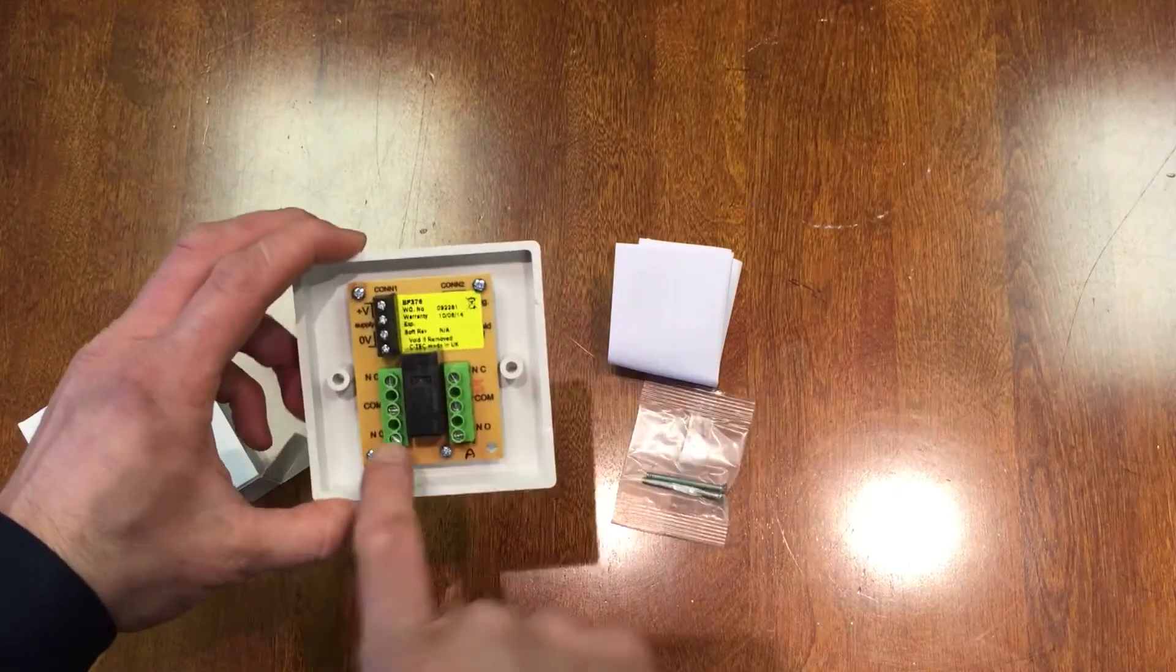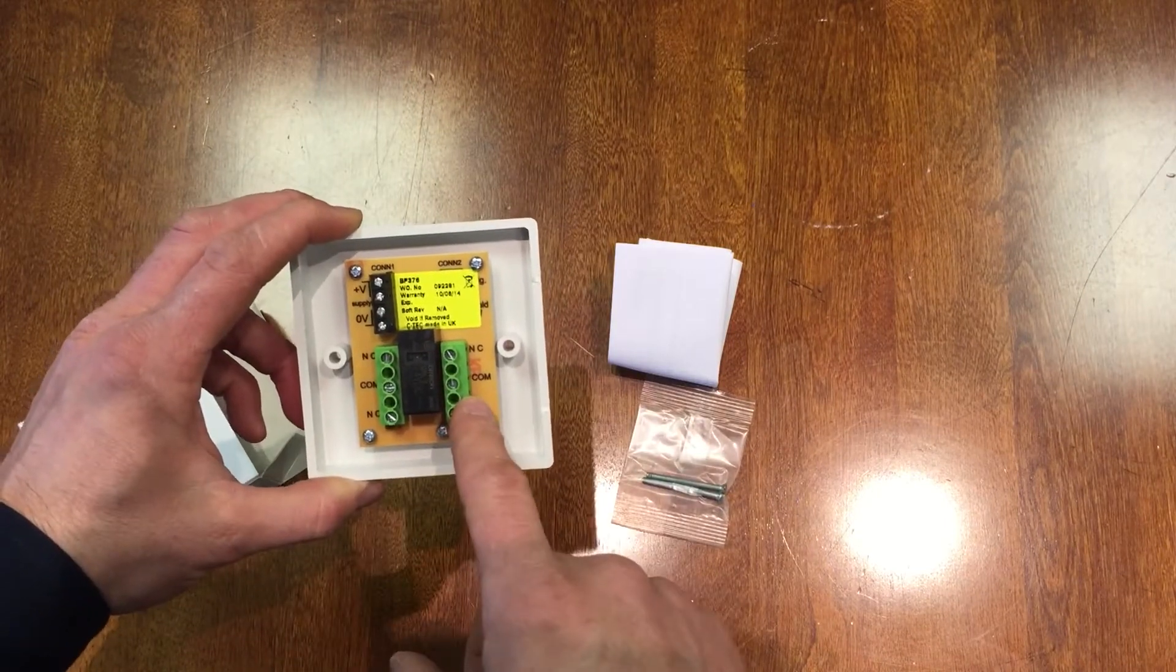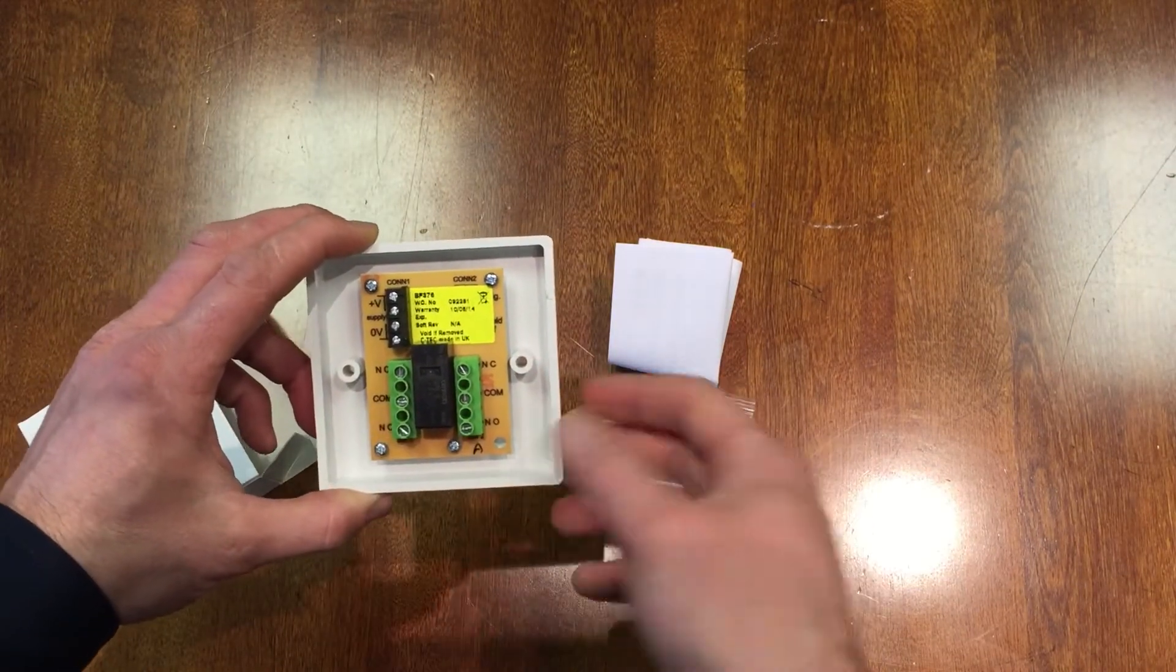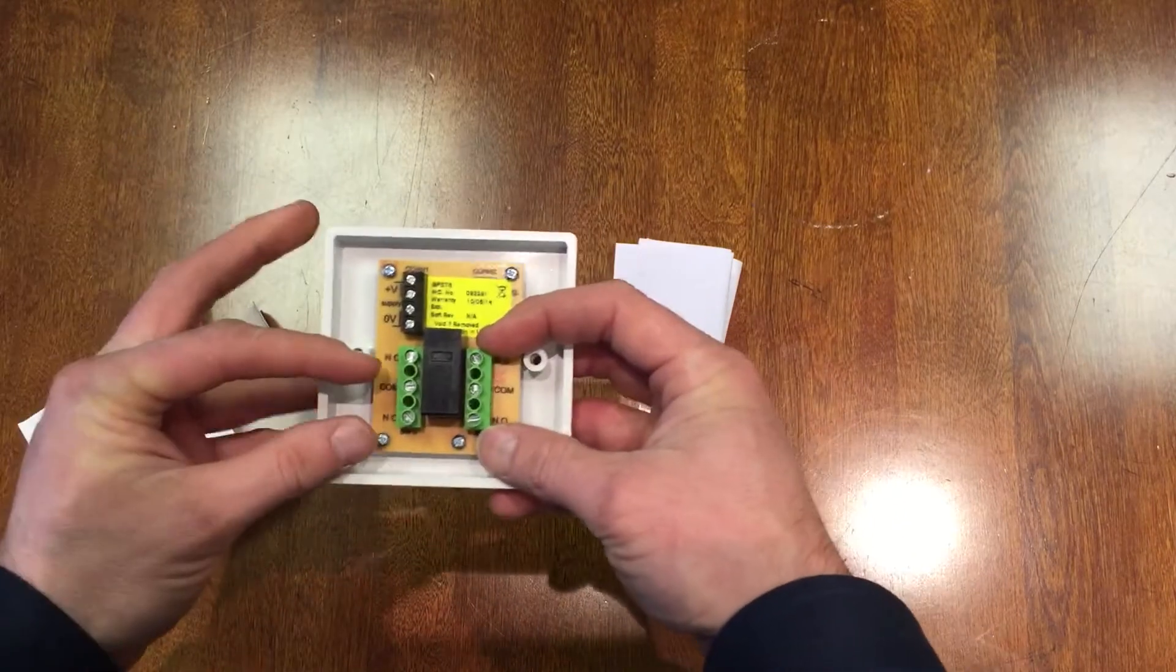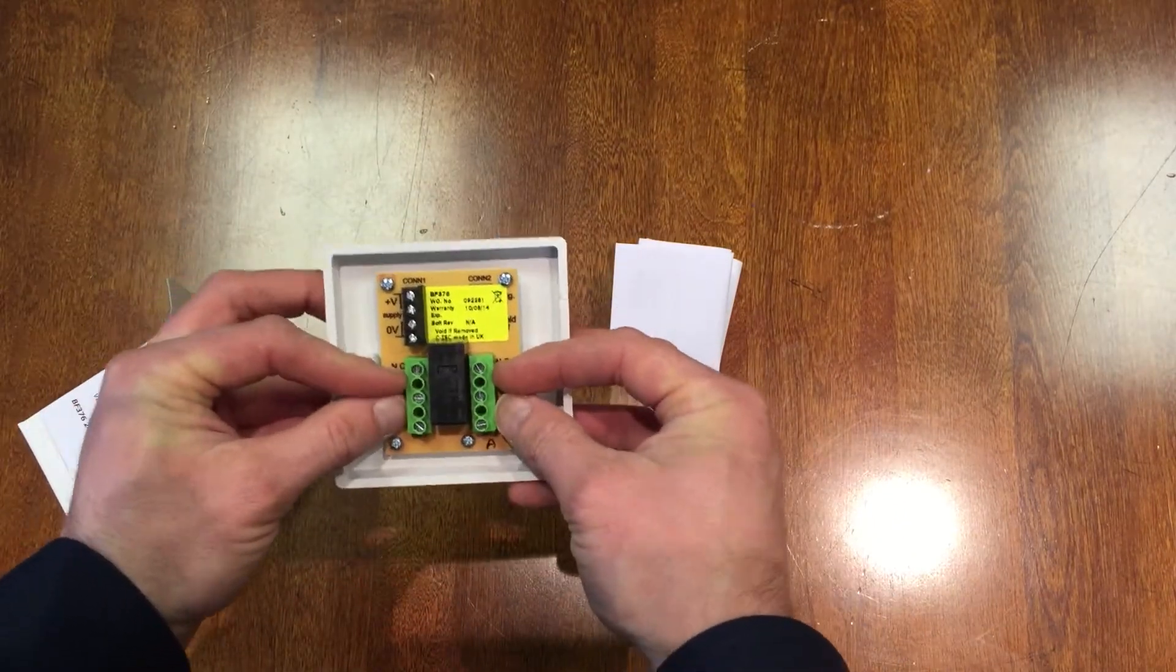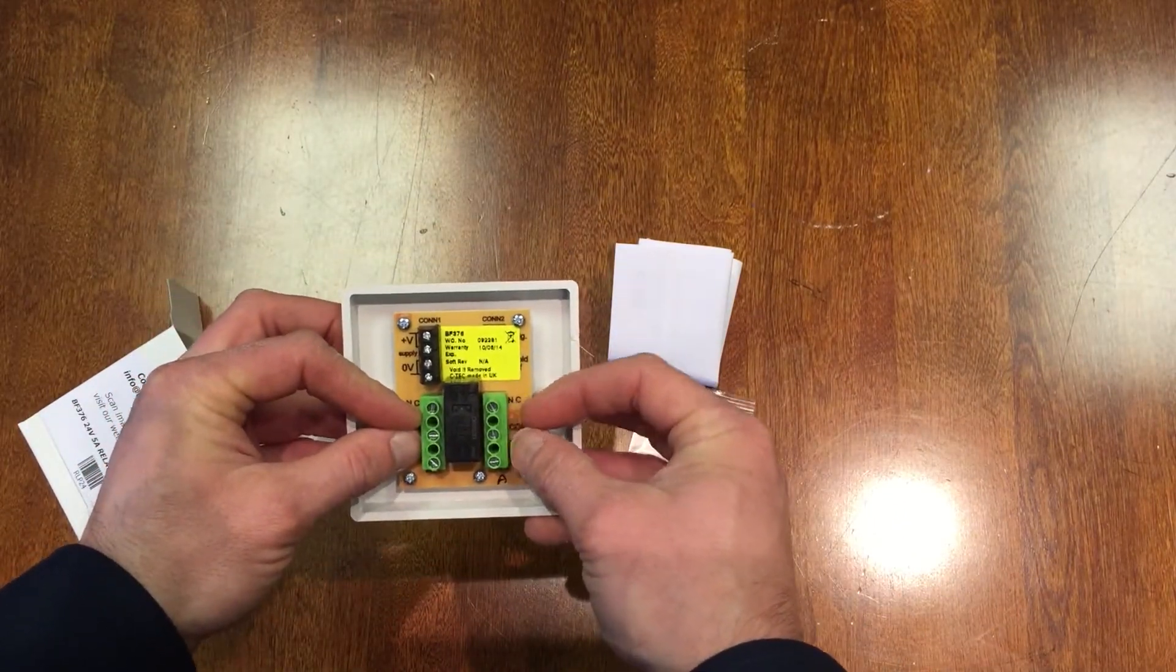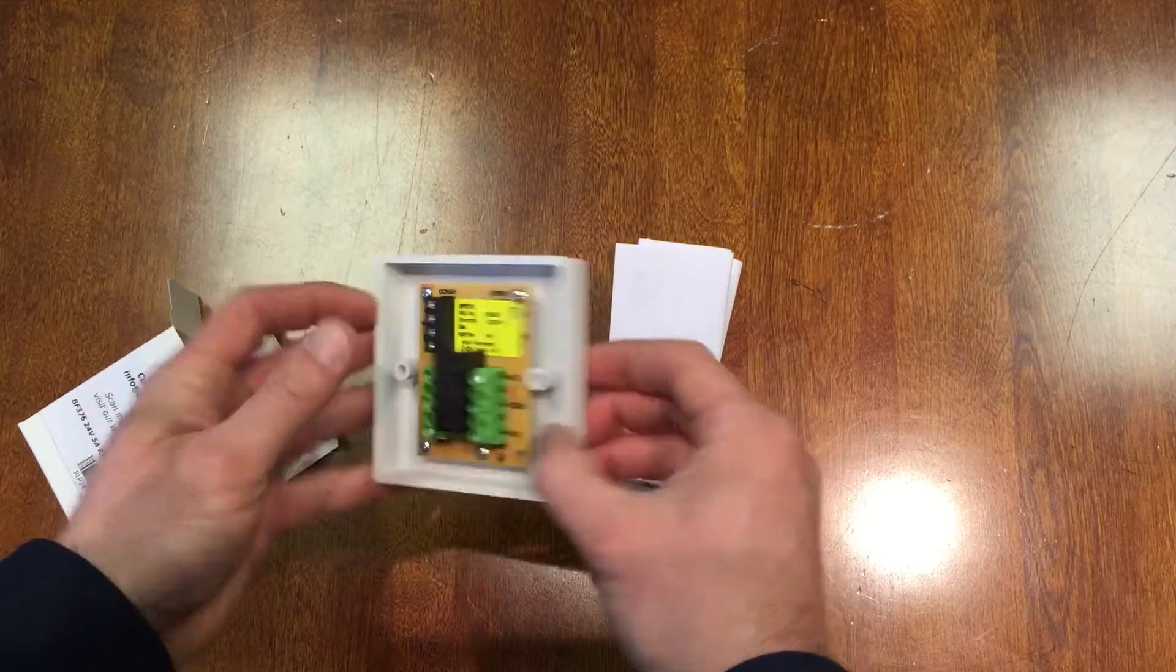When the sounder circuit activates, your relay activates. You have common, normally open, and normally closed terminals, and you have two relays so you could connect to either side of this and trigger two different units. It's an incredibly useful relay.